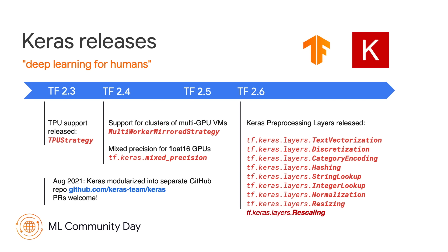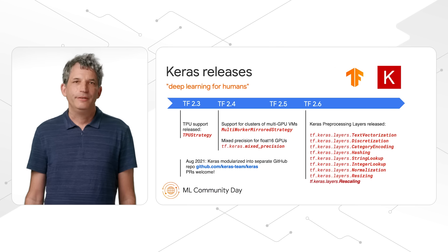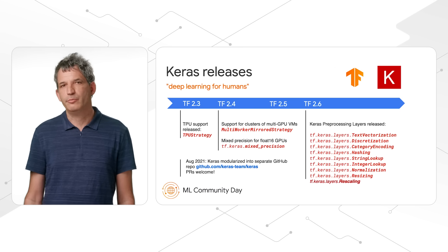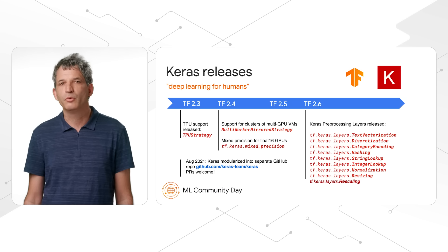In TensorFlow 2.6, Keras preprocessing layers were released, making it much easier to add preprocessing capabilities to your models. They include multiple preprocessing layers for categorical data, replacing the Feature Columns API from TensorFlow 1. Preprocessing layers also add a new comprehensive text vectorization layer that will make your NLP models much more readable. Additionally, as of TF 2.6, Keras has been modularized as a separate PIP package on top of TensorFlow, installed by default when you install TensorFlow, and now lives in a separate GitHub repository. This will make it much easier for the community to contribute to the development of Keras, and we welcome your PRs.